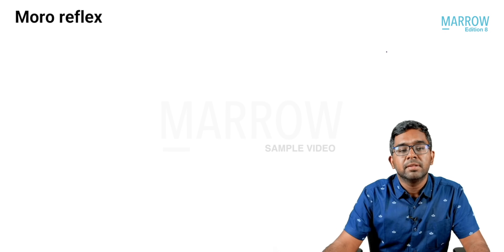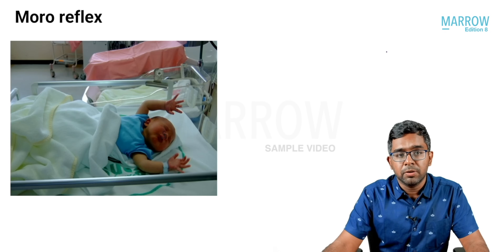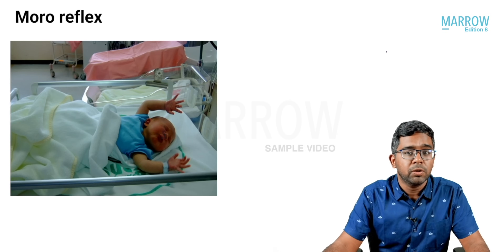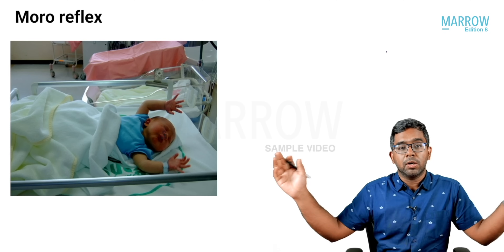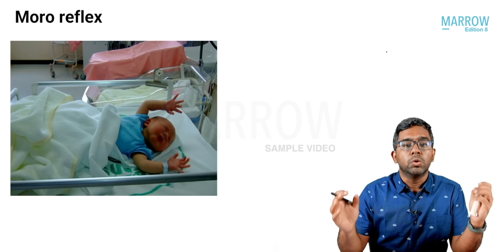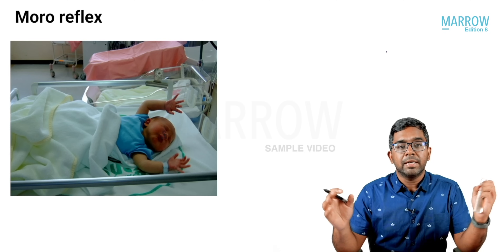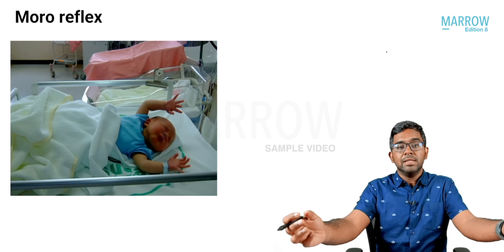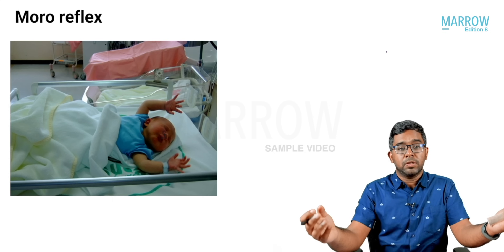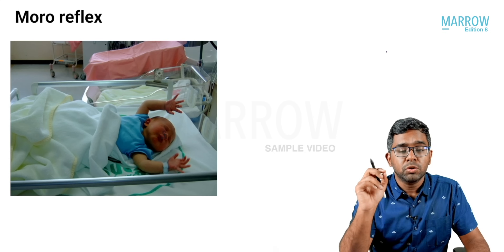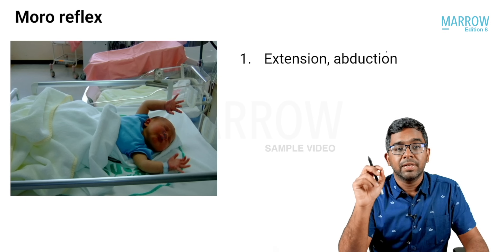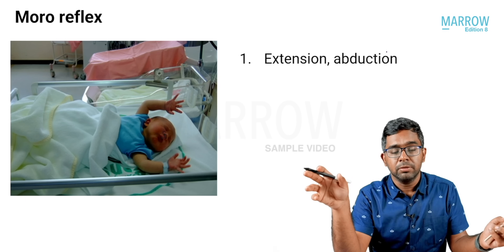Having seen the demonstration, this is the response after you elicit the Moro reflex. The baby's hands will go out — that is abduction — and the hands will also straighten. That is extension. So the first component of the Moro reflex is extension and abduction.